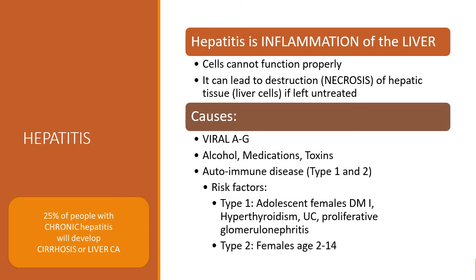The most common causes of acute hepatitis are viral infections with the hepatitis viruses. Secondary infections can also occur from viruses such as the Epstein-Barr virus, the herpes simplex virus, varicella zoster, and the cytomegalovirus.